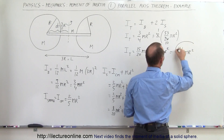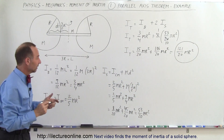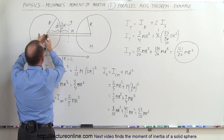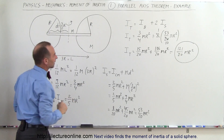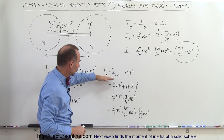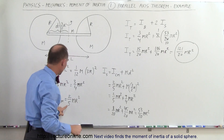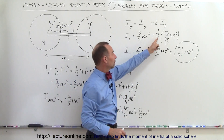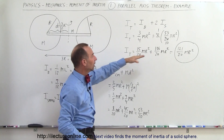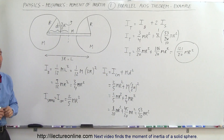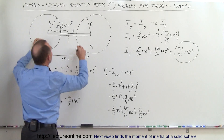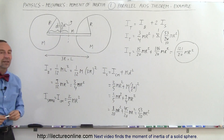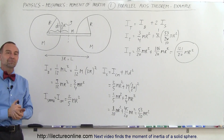So (121/20) mr² is the total moment of inertia of a bar of mass m and length 3r with two spheres attached so that each sphere's center lines up at the edge of the bar. We used the parallel axis theorem: take I_cm of a sphere, add m times the displacement squared, multiply by two, and add the bar's moment of inertia. Of course, if you attach the spheres at the end of the bar, the displacement is larger and you can work it out similarly.